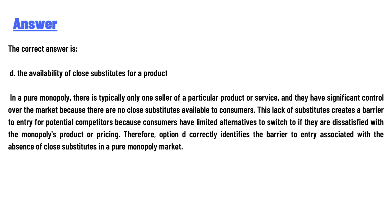The correct answer is D: the availability of close substitutes for a product. In a pure monopoly, there is typically only one seller of a particular product or service, and they have significant control over the market because there are...